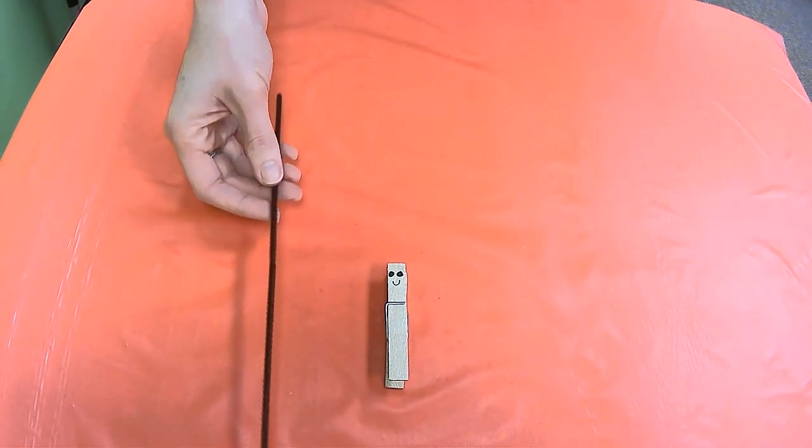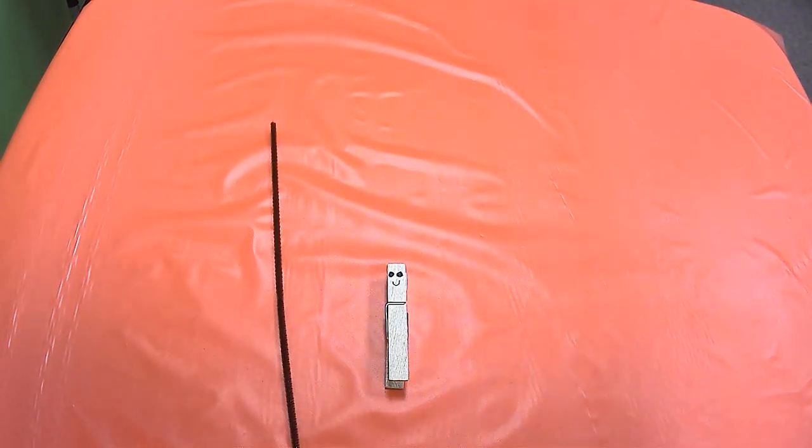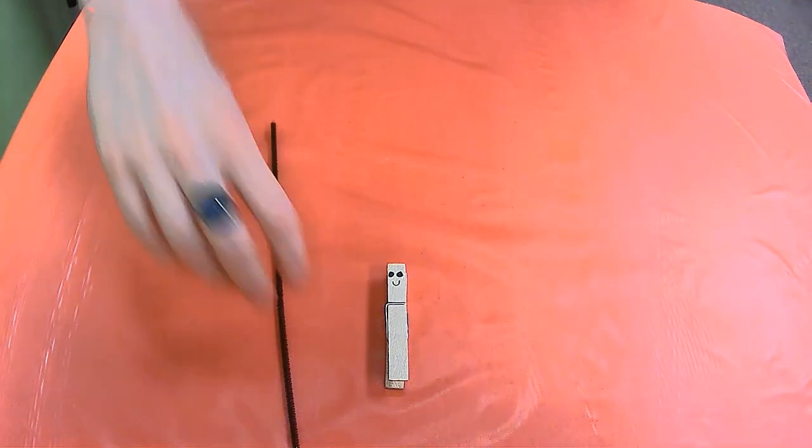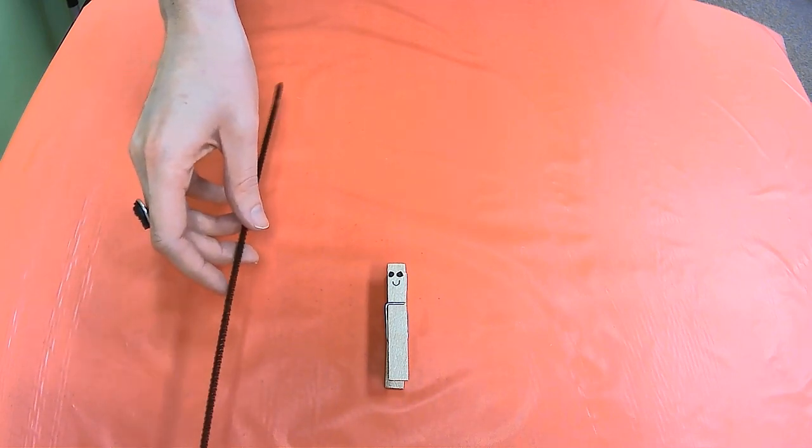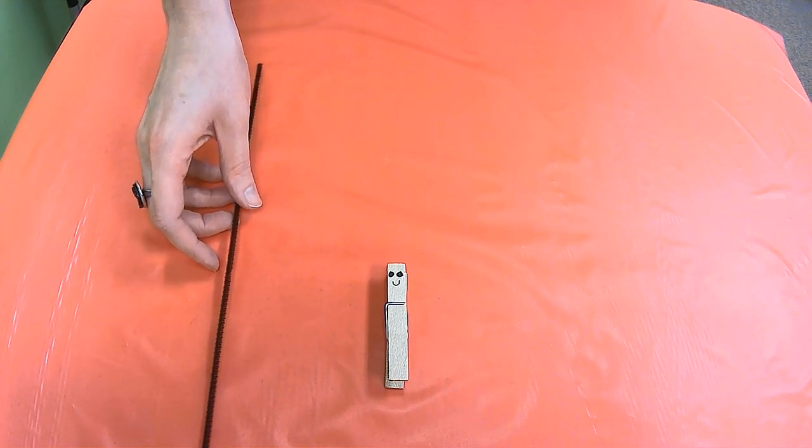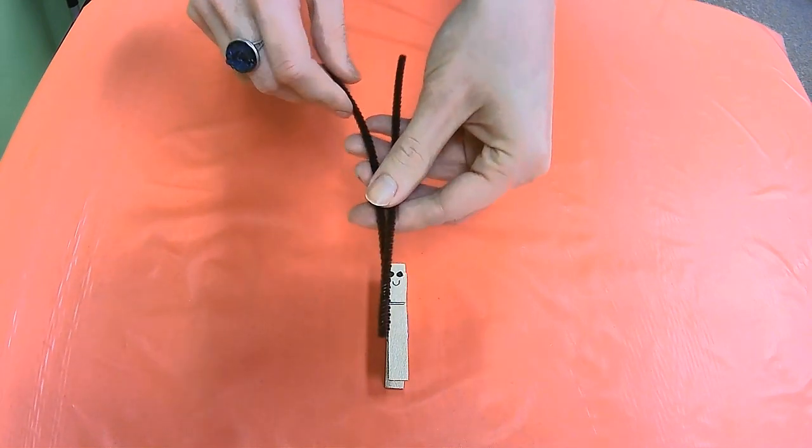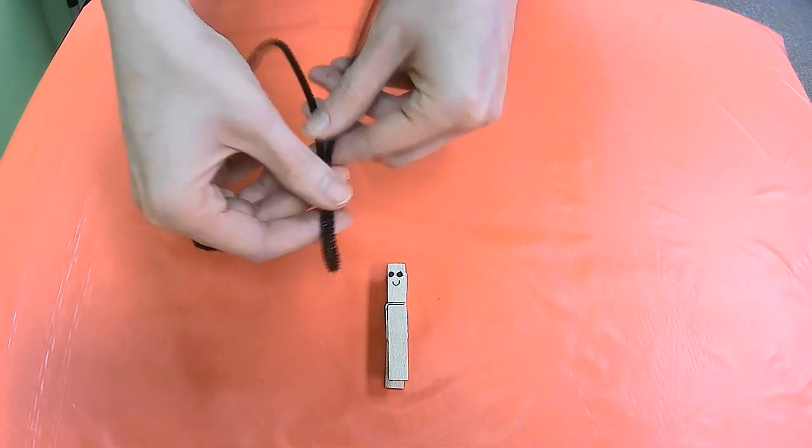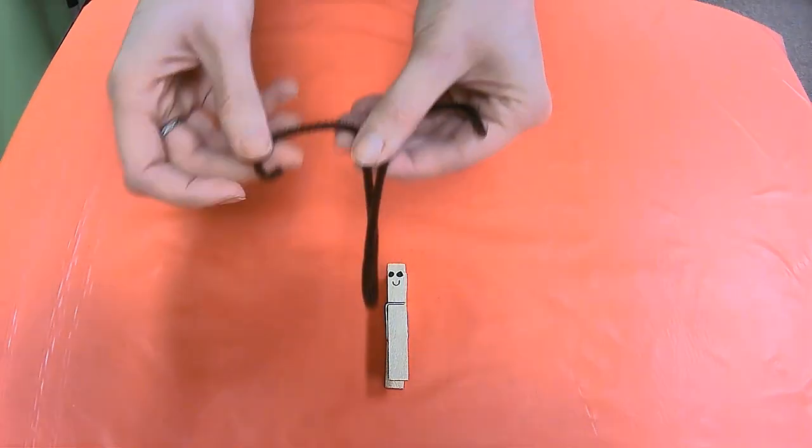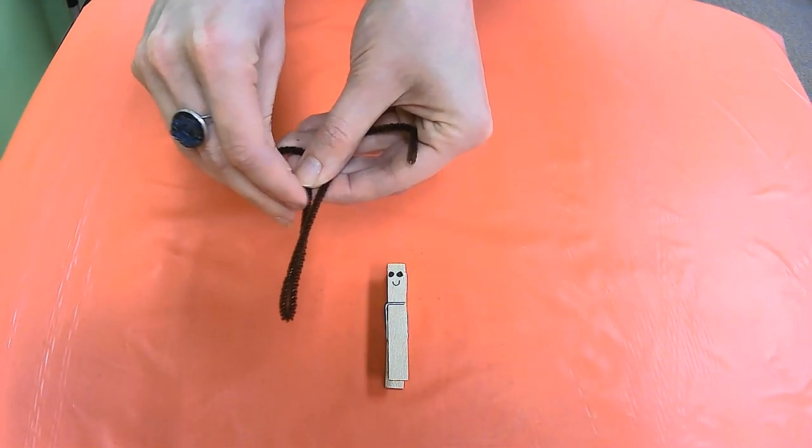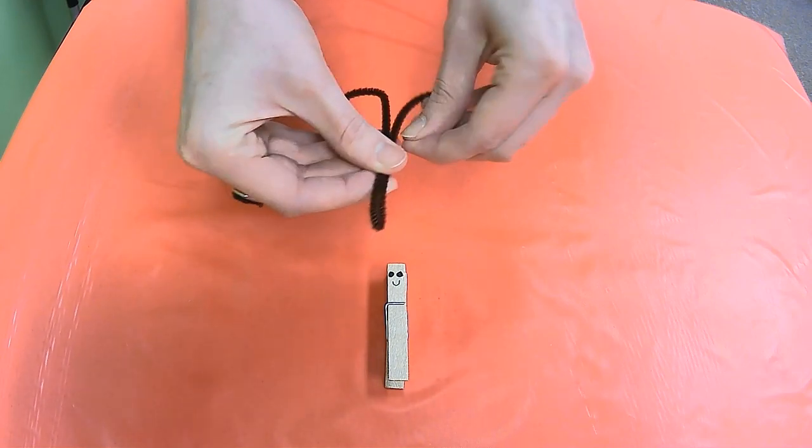For your pipe cleaner, feel free to use any color you would like. I have chosen a brown pipe cleaner for my antenna. As you continue to wait for your coffee filter to dry, you can go ahead and assemble your antenna. You can also wait until after you apply the coffee filter wings if you would prefer, but I'm going to go ahead and show you how I made the antenna. Again, how you decide to make yours is totally up to you. For my antenna, I bent the pipe cleaner in half and twisted the outsides like this and then made little curly cues on the end. Just be super careful as you do this because the ends of the pipe cleaner are going to be a little bit sharp.